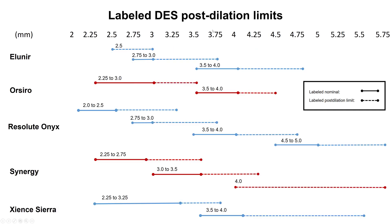The other important factor is to know the post-dilation limits for the various drug-eluting stents. For example, if we have a vessel with a proximal diameter of 4.0 and a distal main vessel diameter of 3.0, and we place an Elunir or an Osiro, this cannot be post-dilated to 4.0. For a vessel like this, we should use something like a Synergy stent that can be post-dilated up to more than 4 millimeters. Having this information printed and posted in the cath lab can be very useful when doing bifurcation stenting and also left main stenting.